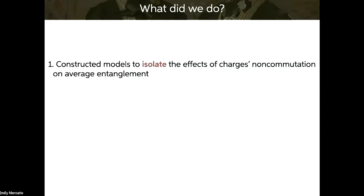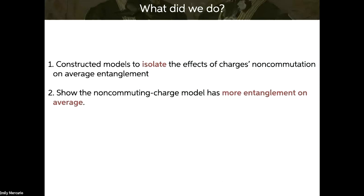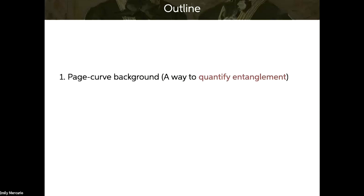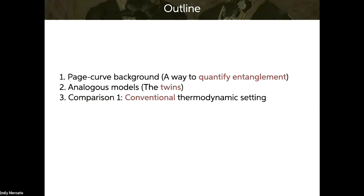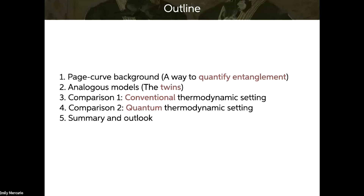These are our two motivating questions. What we did was first construct models to isolate the effects of charges' non-commutation on average entanglement — these are the twins I was referring to. We then show that the non-commuting charge model has more entanglement on average, analytically and numerically in two settings: one suggested by more conventional thermodynamics and one in a more quantum setting. For the rest of the talk, we'll begin with a page curve background, then present the analogous models, go through our comparisons, and then our summary and outlook.